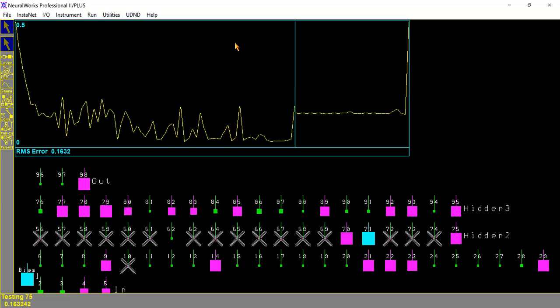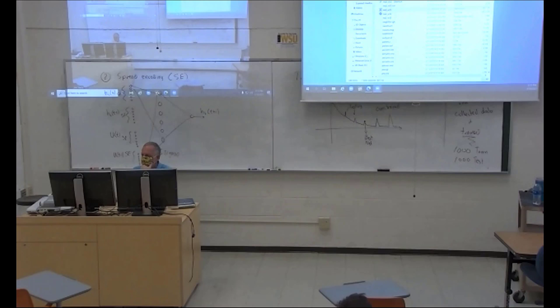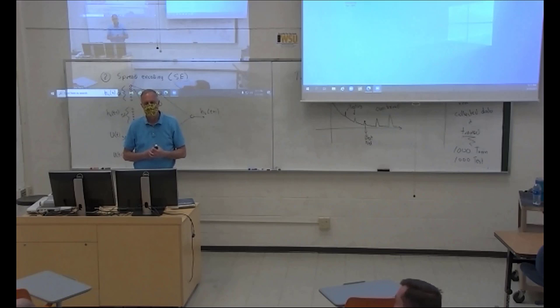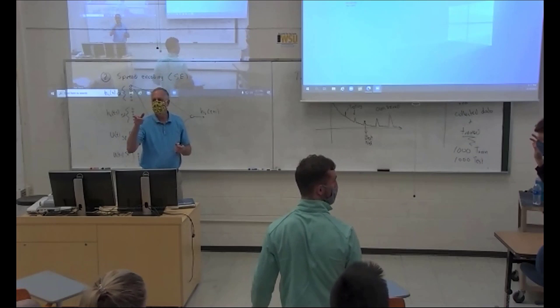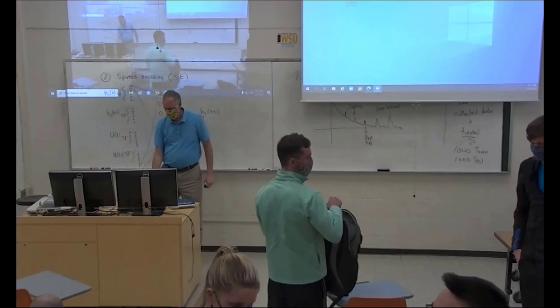We need to go through a couple more definitions and how they use the models, because they compare the spread coding and single node data models. They use it two ways: either as a standalone network or as one-step-ahead prediction. I'll make sure we go through that in detail. Any questions about inverse control? Okay, I'll see you next Monday — good luck.